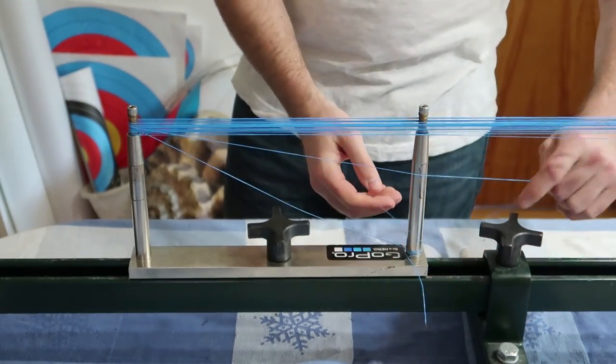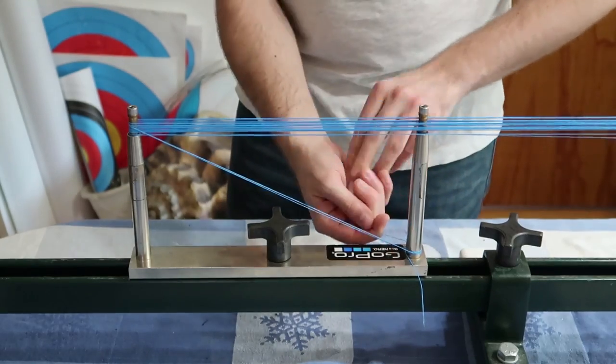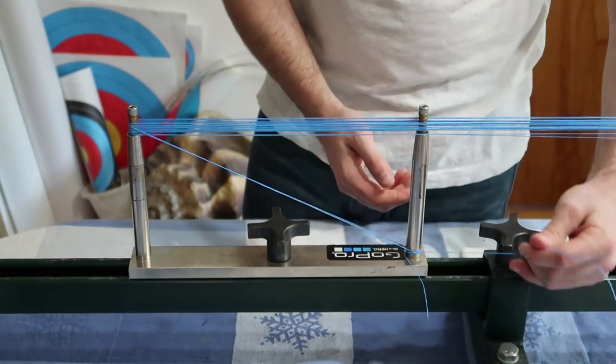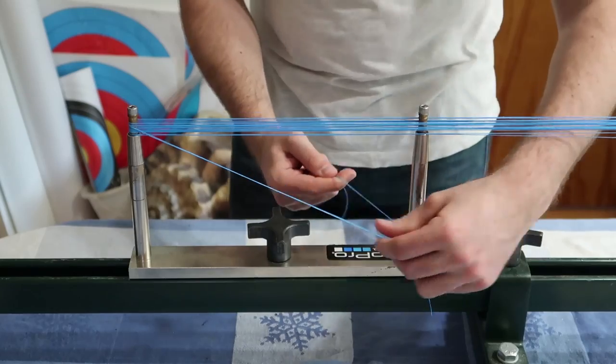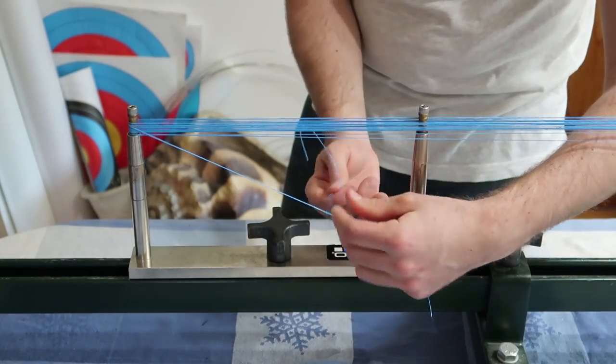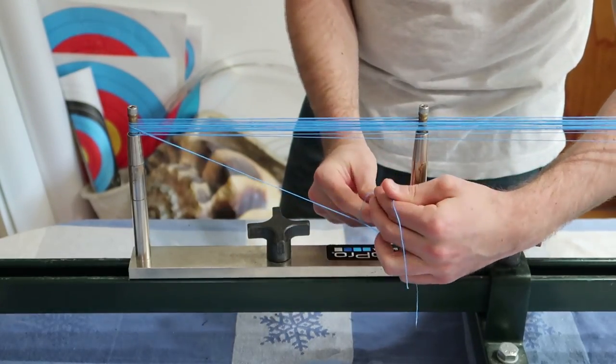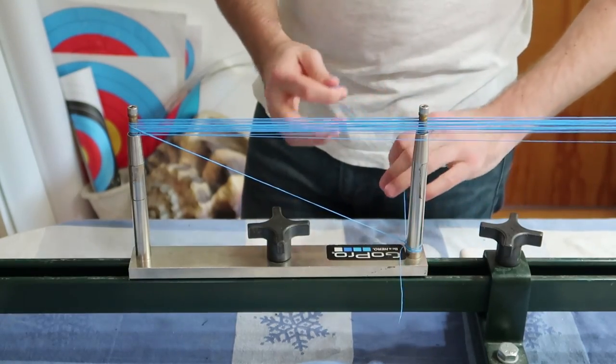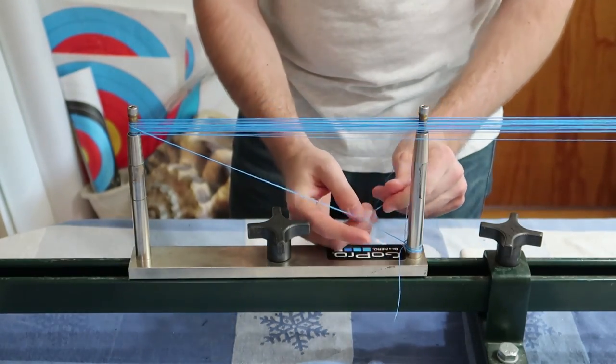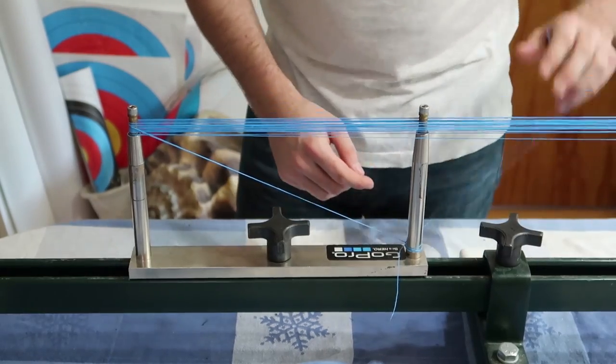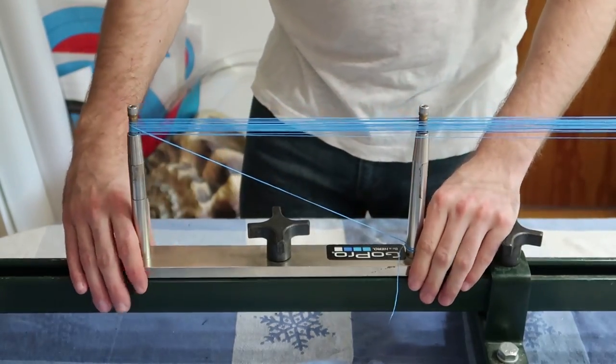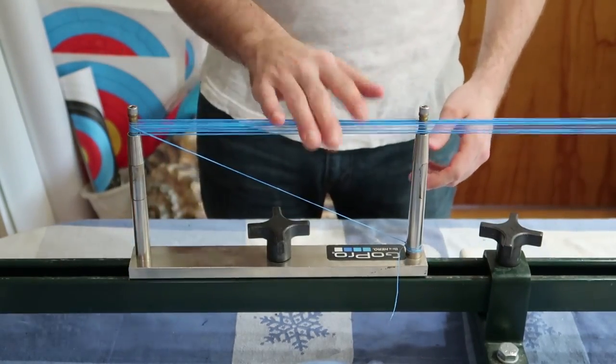Now we're going to, again, tie this one to the bottom here. You can tie the two together if you want. Whatever works for you. This string just needs to be tied to this inner post here in order to make this work. So now that we're tied, it's fairly tight.